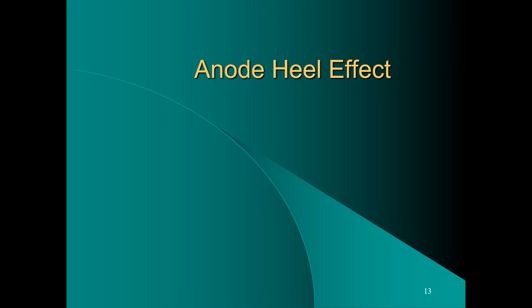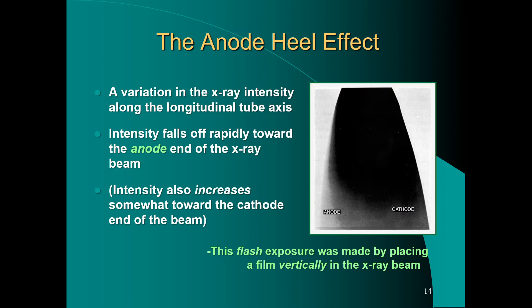The anode heel effect has to do with exposure along the long axis of the table. The anode heel effect is due to the anode itself — the shape of the anode and physics — because the anode is an attenuator made of matter and it will absorb some of the x-ray beam. X-rays traveling toward the anode are absorbed more, and x-rays traveling away from the anode are absorbed less. The anode heel effect is simply defined as a variation in x-ray intensity along the longitudinal tube axis.